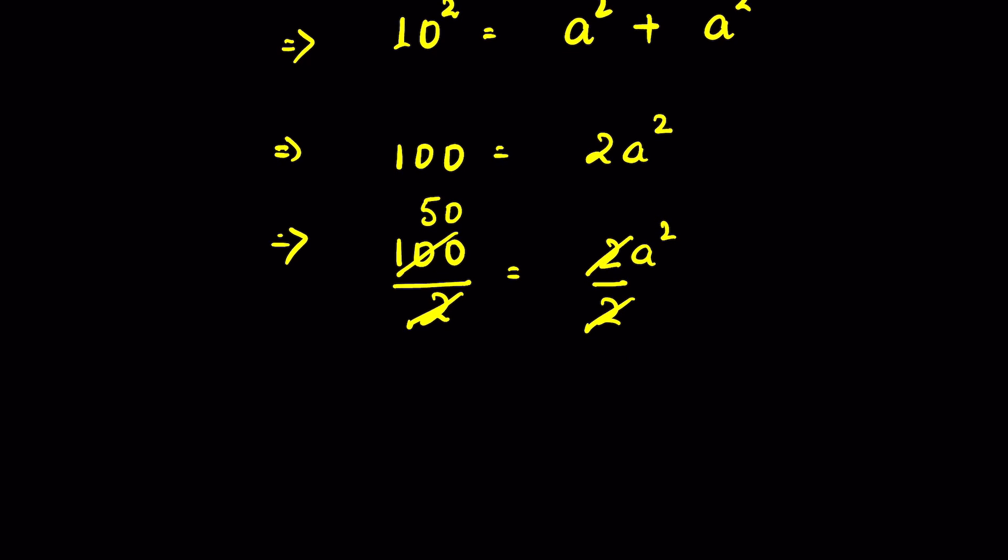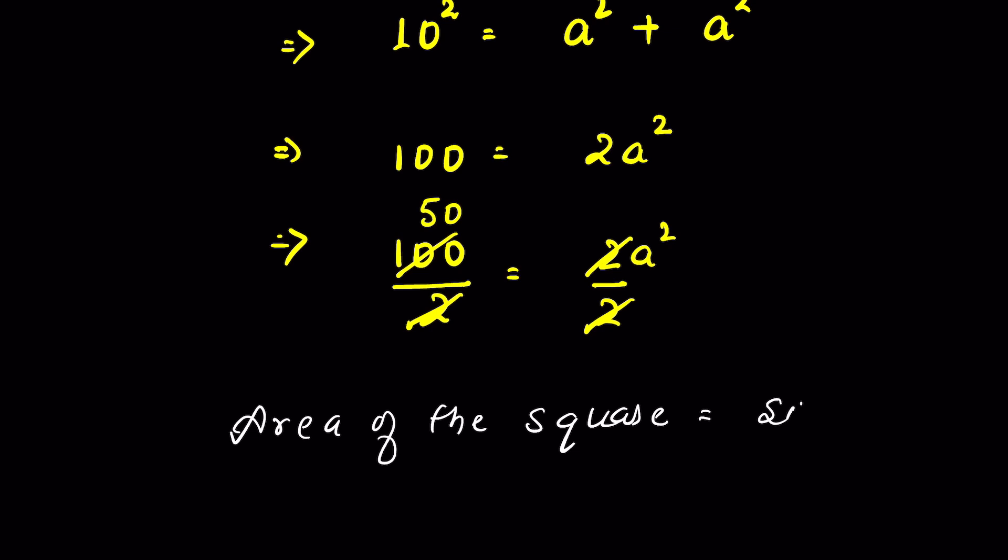We can get the side of the square by square rooting both the sides. But remember, that area of the square is equal to side square. If side here is a, then area of the square ABCD here is a square. Here we have a square is equal to 50 cm square.